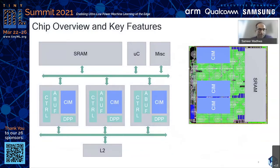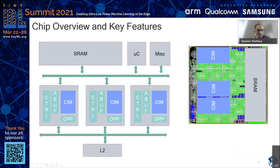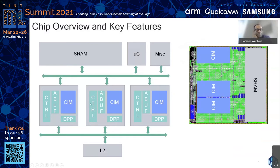The chip micrograph on the right-hand side shows this design has three CIM arrays. Each forms what we call a mixed-signal compute unit, comprising a CIM array, a tightly coupled activation memory buffer, control logic, a DMA, and digital blocks for nonlinear functions and scaling from the CIM array output. One of the three arrays is slightly different from the other two. We have three of these mixed-signal compute units in total.